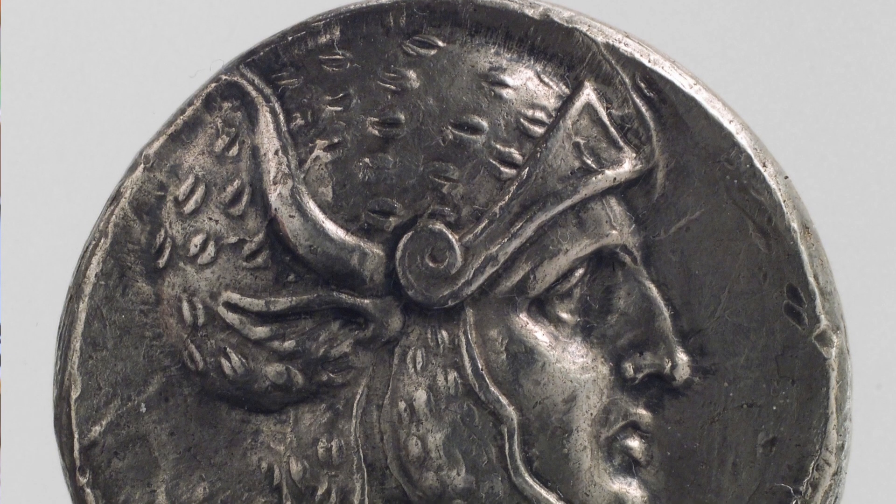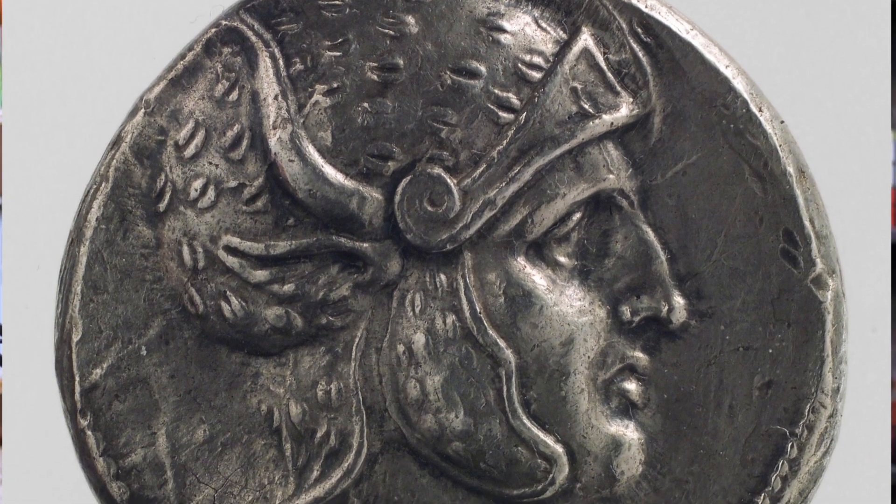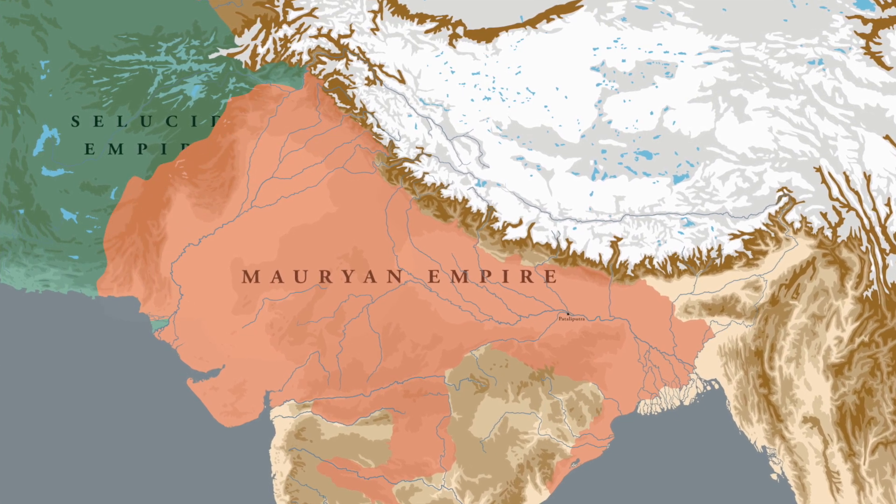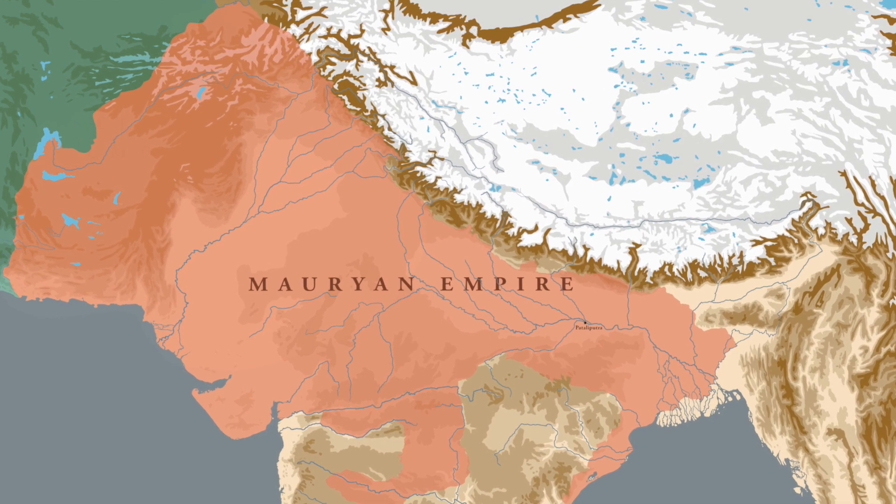In 305 BC, the Seleucid emperor Seleucus Nicator shifted his attention to the eastern part of his territory. For Chandragupta, this was a serious threat because the Seleucid empire was quite powerful and had the ability to defeat the Mauryan empire. The war that followed was advantageous for both sides. Chandragupta gained large amounts of territory in the western part of the Indian subcontinent, whereas Seleucus was given around 500 elephants by Chandragupta, which were later used in his western campaigns.